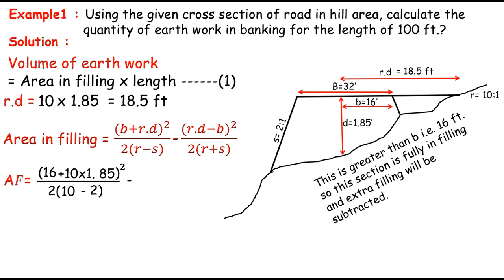And for the power 2, there is minus, which is R times D again. R is known 10 and D is known 1.85. So 10 times 1.85 minus B. That's 16 feet and whole square. And again divided by 2 times R is known 10 plus S. That's the side slope, which is 2 and 1. So plus 2. By doing some math, we can get area in filling equals 74.13 square feet.